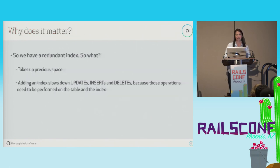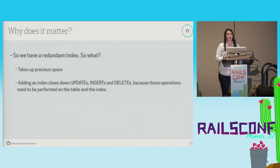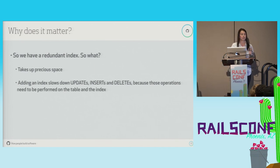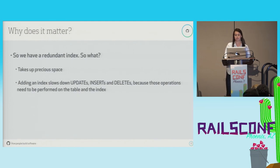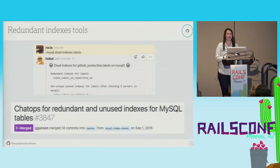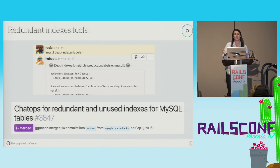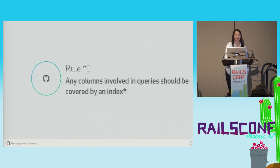So why does this matter? Our selects are still going to be super fast — the index will just use one or the other. Well, indexes take up space, and that's something we always want to be aware of. Most importantly, adding an index is going to slow down updates, inserts, and deletes, because since you're storing that information in more than one place, if that information changes it needs to be updated in all those places. Even though we get a performance improvement on selects, over-indexing can lead to performance problems for other operations. We care so much about this at GitHub that we have a chat ops command built into our Slack — MySQL data indexes — that takes the name of a table and tells us if there are any redundant or unused indexes. The rule is: any columns involved in queries should be covered by an index — just make sure you're avoiding unused or redundant indexes.